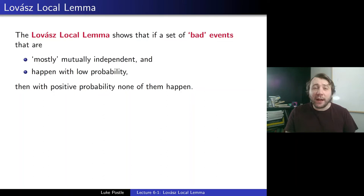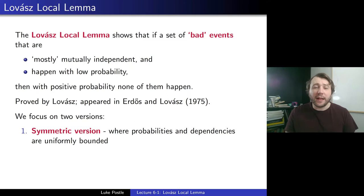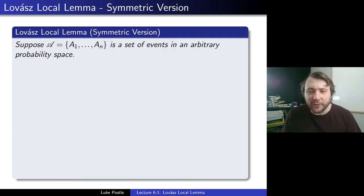So that's the informal version. We're going to have two versions. I'll also note this was proved by Lovász — it appeared in a paper of Erdős and Lovász in 1975, but Erdős gives Lovász the credit. We'll focus on two versions in this lecture: the symmetric version, where probabilities and dependencies are uniformly bounded, and a general version where you can allow the probabilities and dependencies to vary, which is also quite useful.